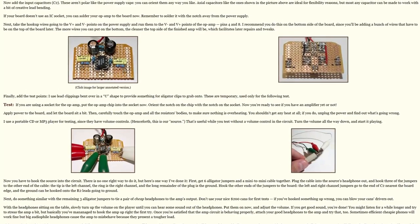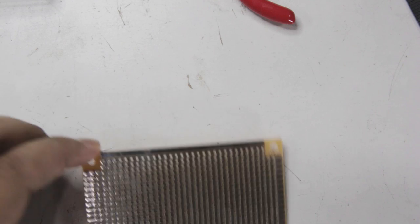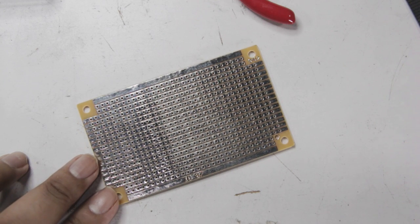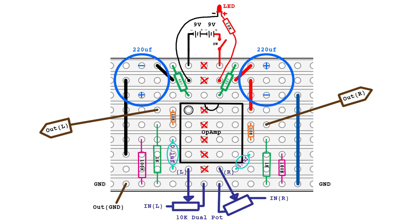Today we're going to take a different approach by building this headphone amplifier using a stripboard. Here is how all the components are laid out. This diagram illustrates the top view of the finished board with the copper cladding strips on the bottom.